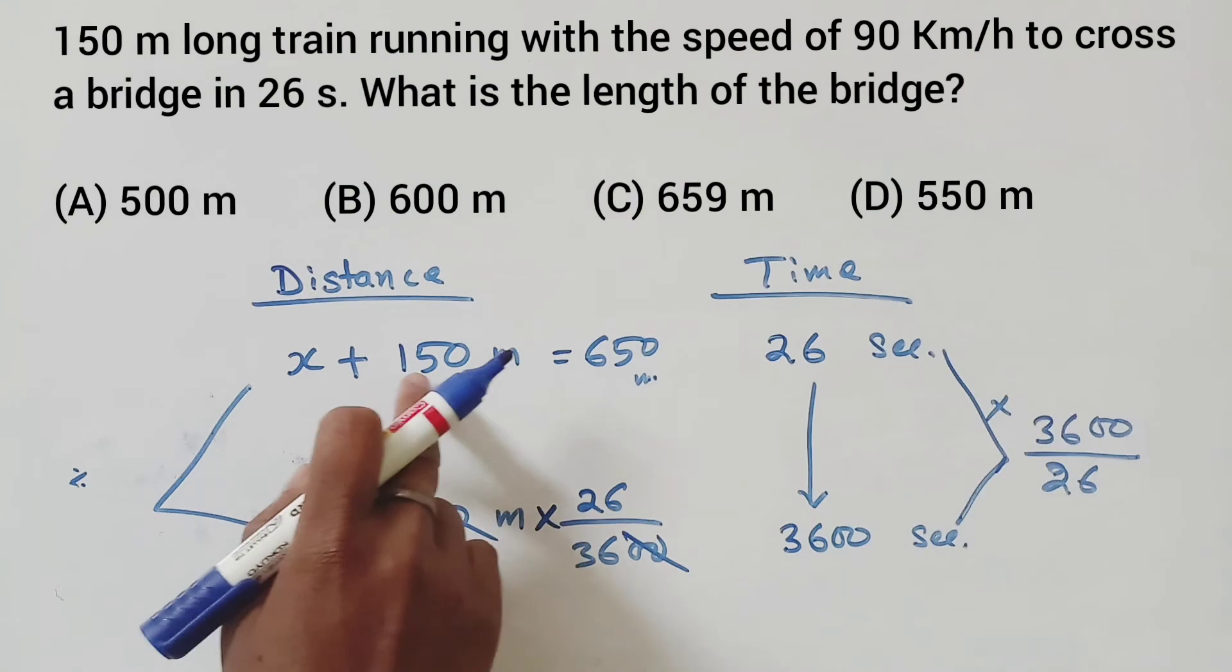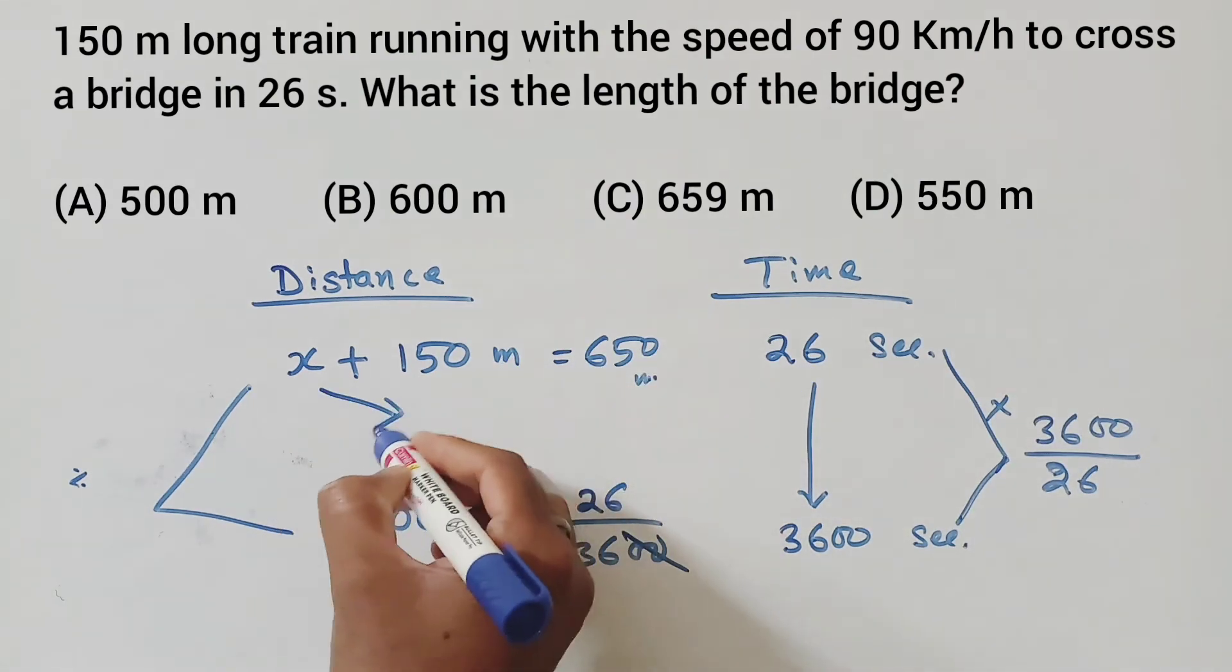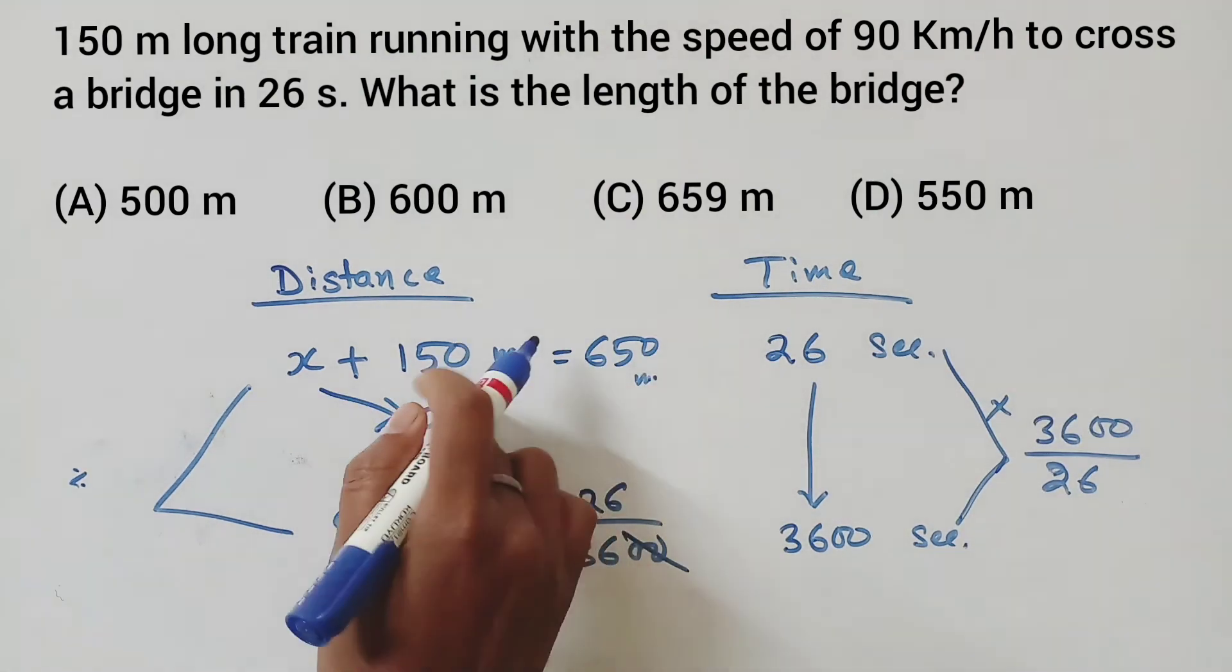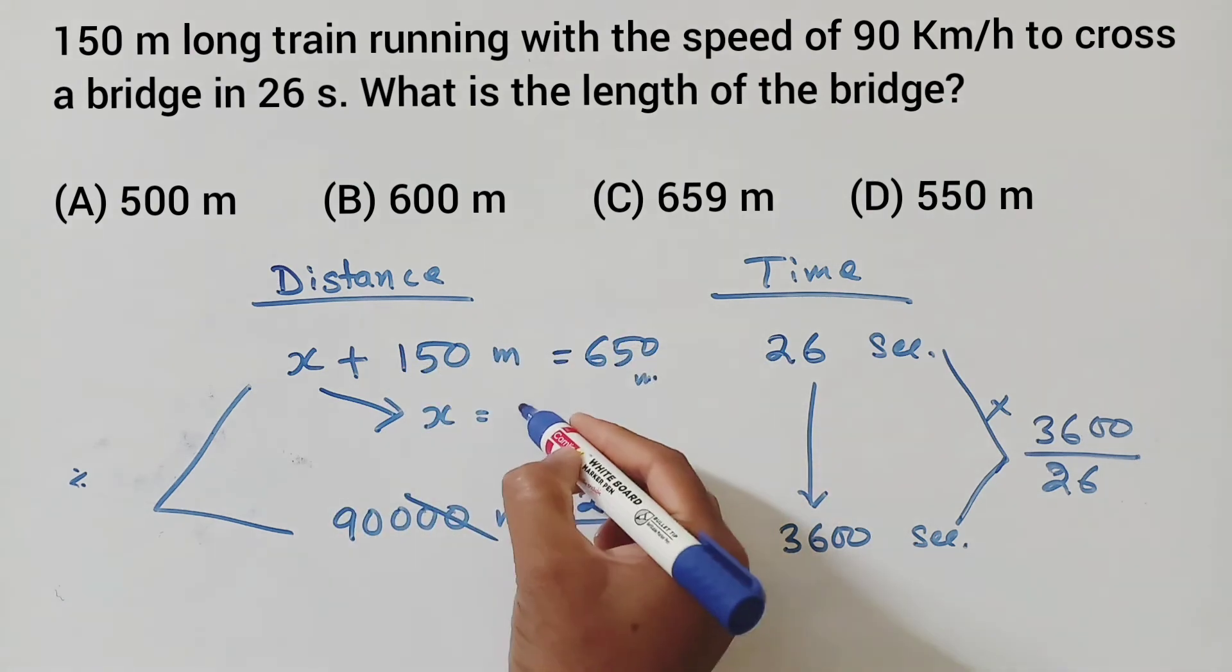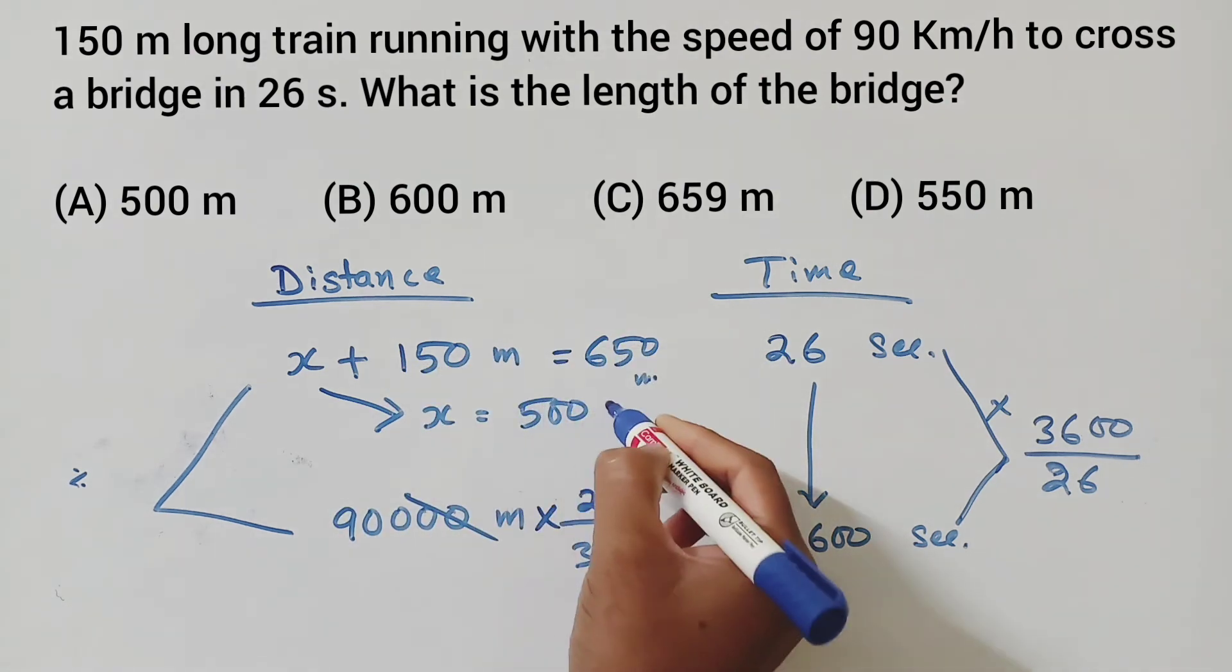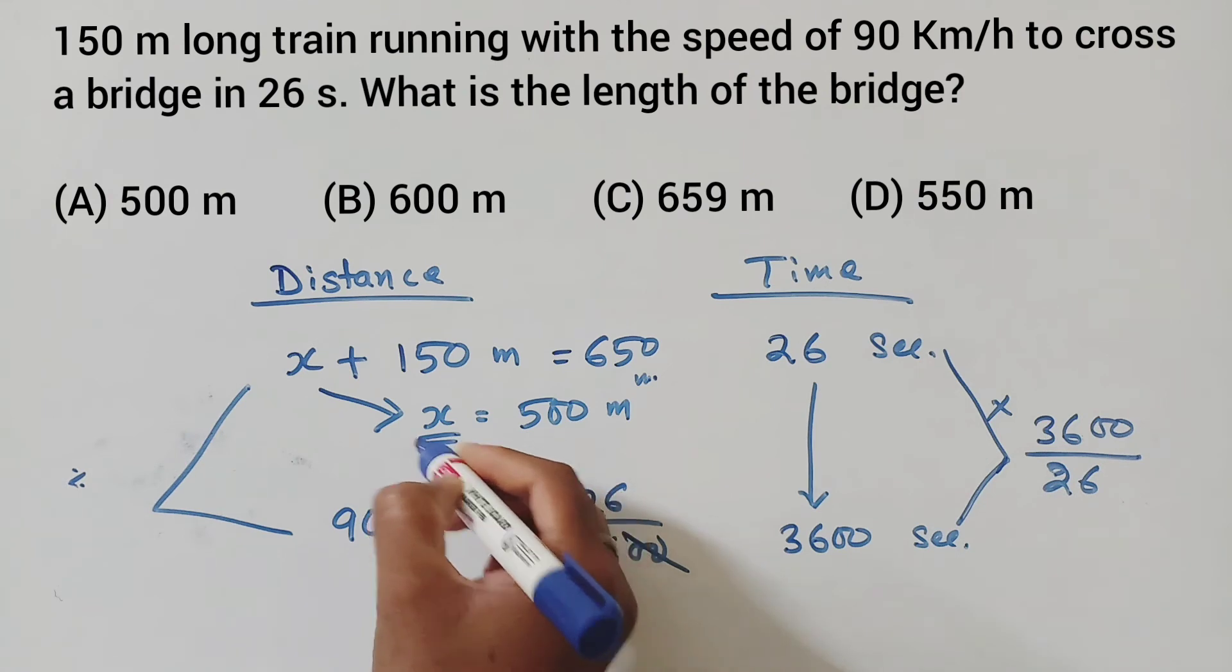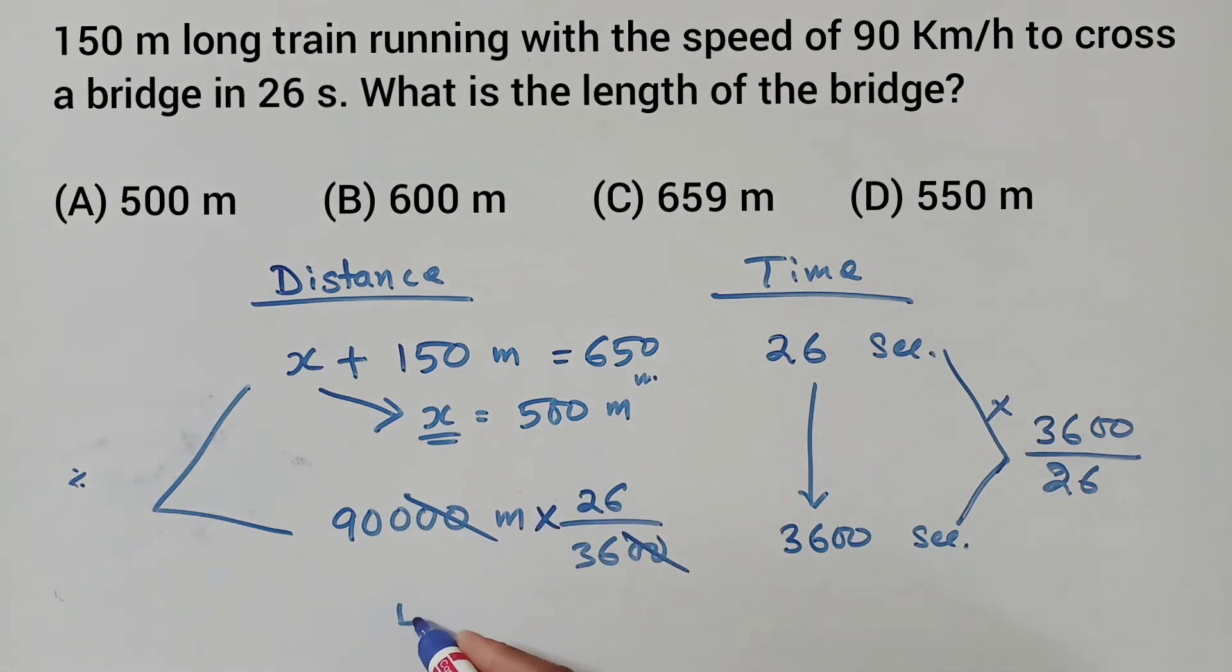So x plus 150 becomes 650. So x becomes 500. Length of bridge is equal to 500 meter.